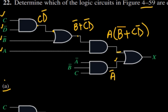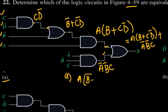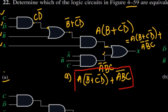The second input to the final OR gate comes from another AND gate, which gives us A prime·B prime·C. So at the output of the final OR gate, the expression we get is A·(B prime + C·D prime) + A prime·B prime·C. This is the expression for part A.